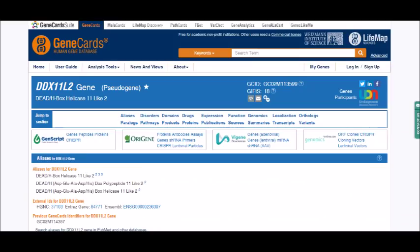First, Tompkins claims that the DDX11L2 is a gene that is highly expressed. But it's not. It's a pseudogene with no known function. The claim that it's functional because it is expressed is bunk because the expression level is so small it's indistinguishable from random noise.